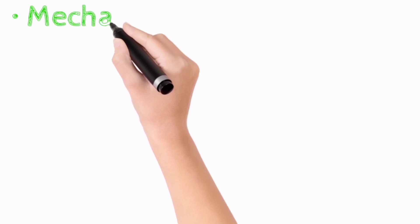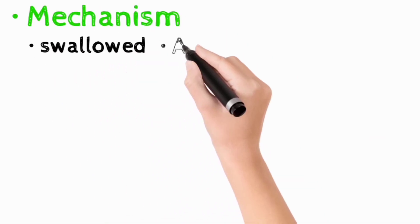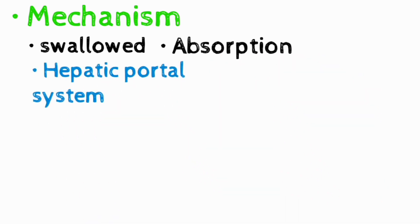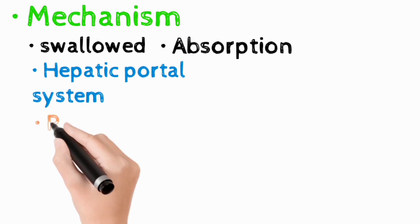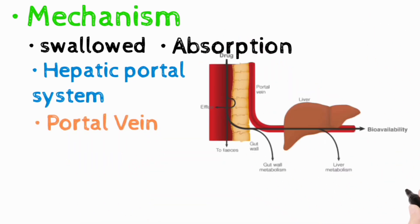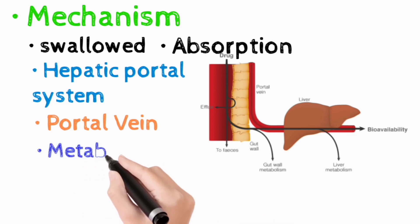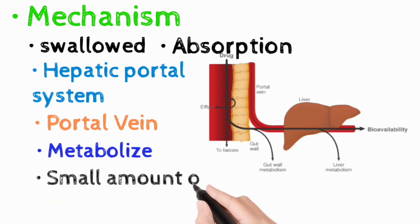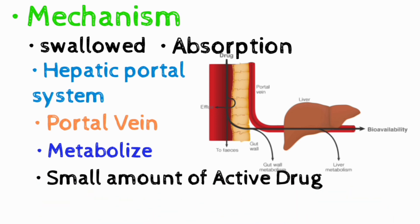So how does first pass metabolism take place? After the drug is swallowed, it is absorbed into the digestive system and enters the hepatic portal system. It is carried through the portal vein into the liver before reaching the rest of the body or the systemic circulation. The liver metabolizes many drugs, sometimes to such an extent that only a small amount of the active drug reaches the systemic circulation.